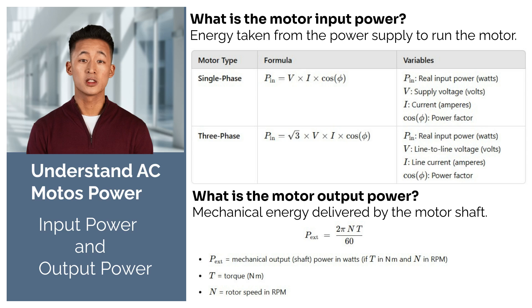Output power depends on two things: how fast the shaft is turning, which we call speed, and how strong the turning force is, which we call torque. The motor output formula is shown on the screen.